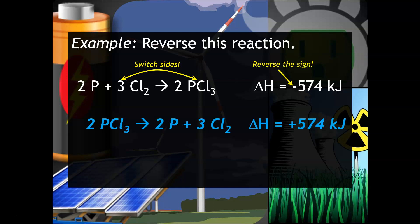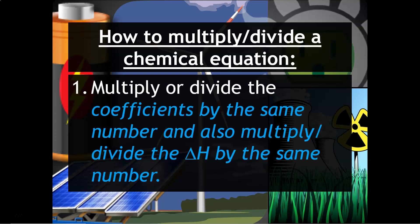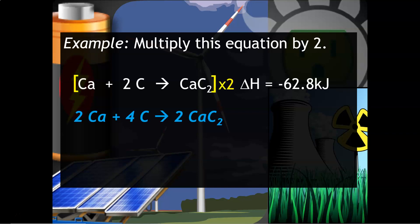You can also multiply and divide chemical equations. So if you multiply or divide the coefficients by the same number you want to also multiply or divide the delta H by the same exact number. For example multiply this equation by two. Notice you now have two calciums four carbons and two calcium carbides. Then since we multiply that by two we also have to multiply the delta H by two.